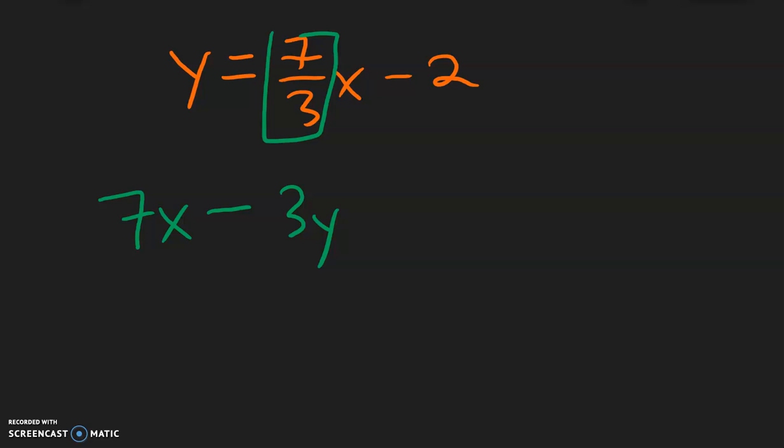And then the y-intercept over here, the y-intercept is negative 2, so I will put a negative 2 on the y-coordinate, the x-coordinate is going to be 0, and then we will plug those points in.